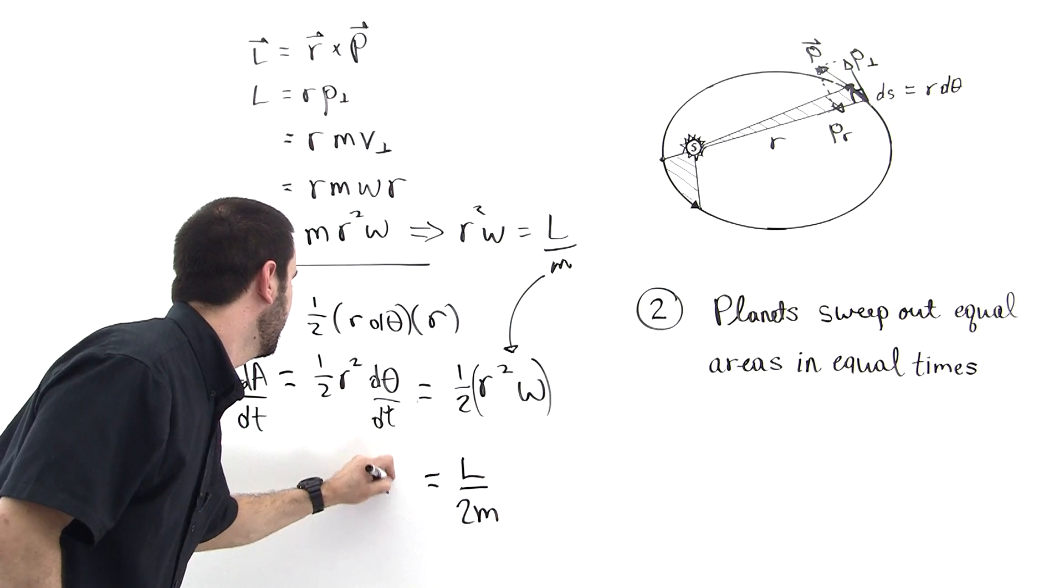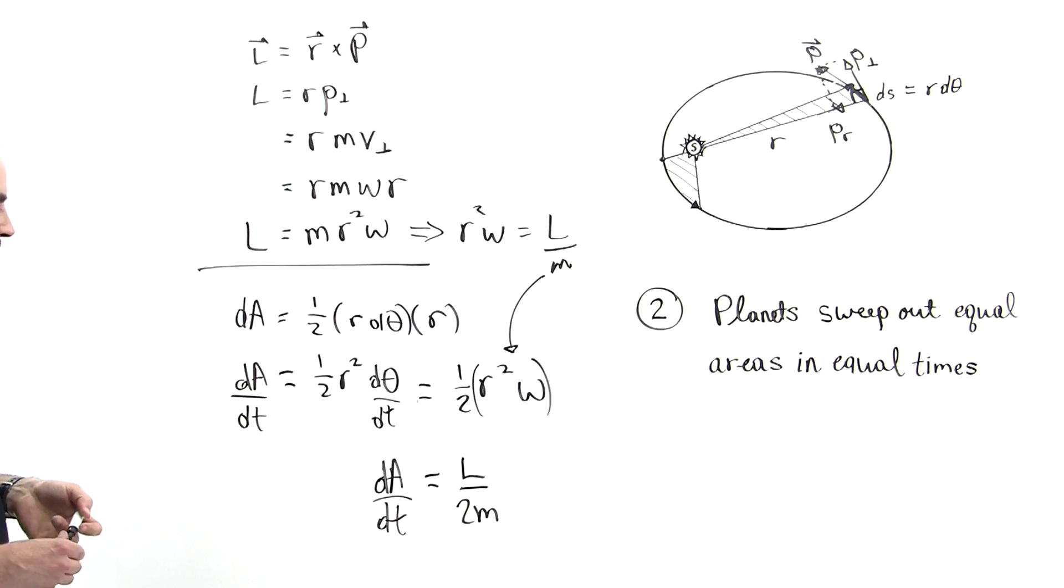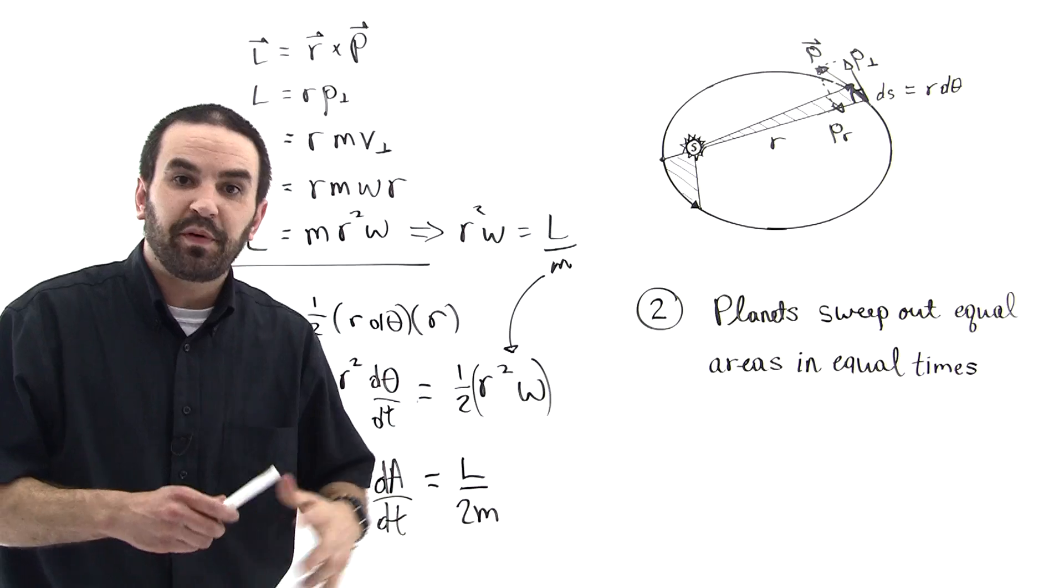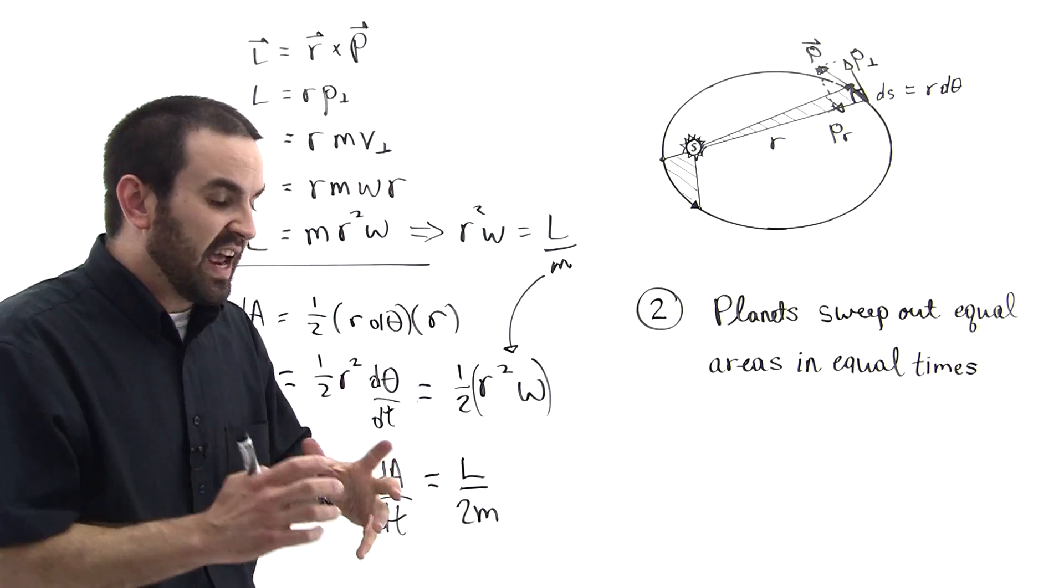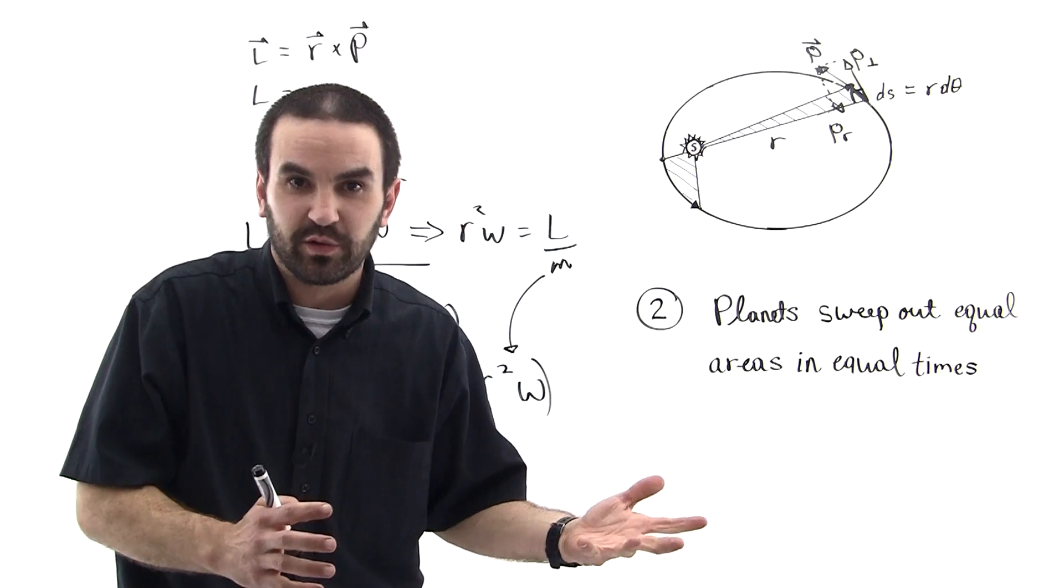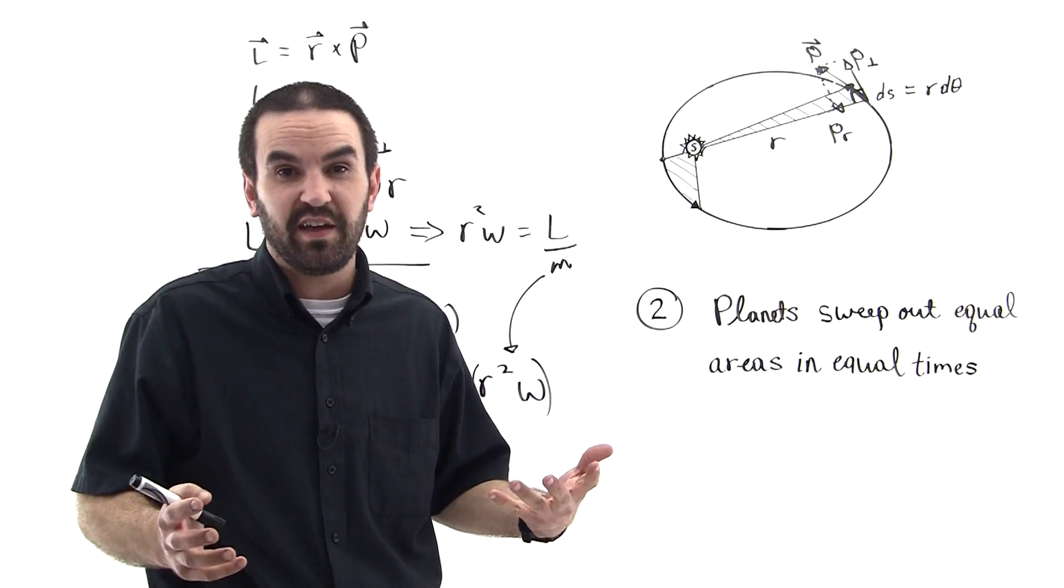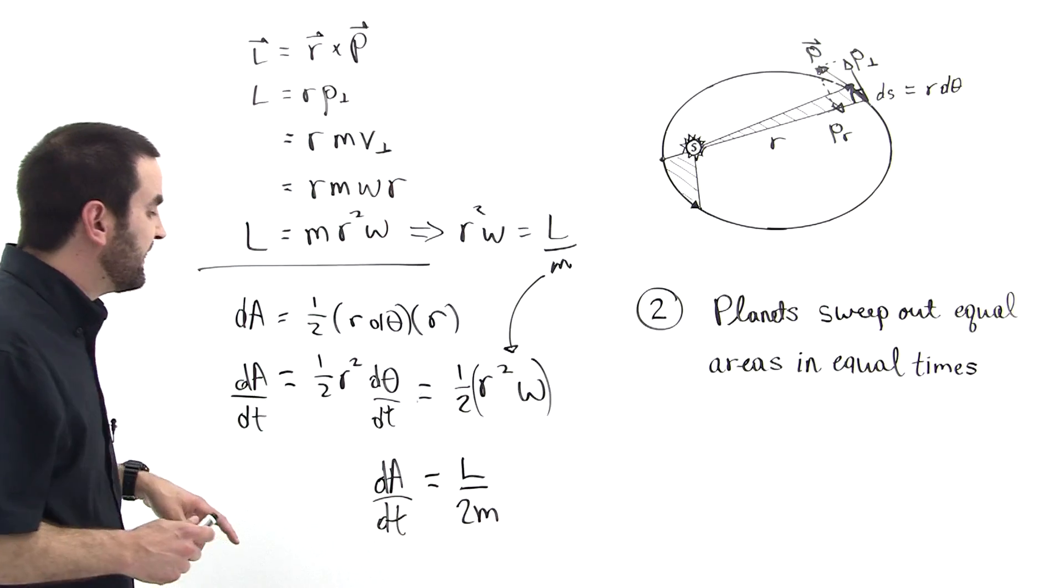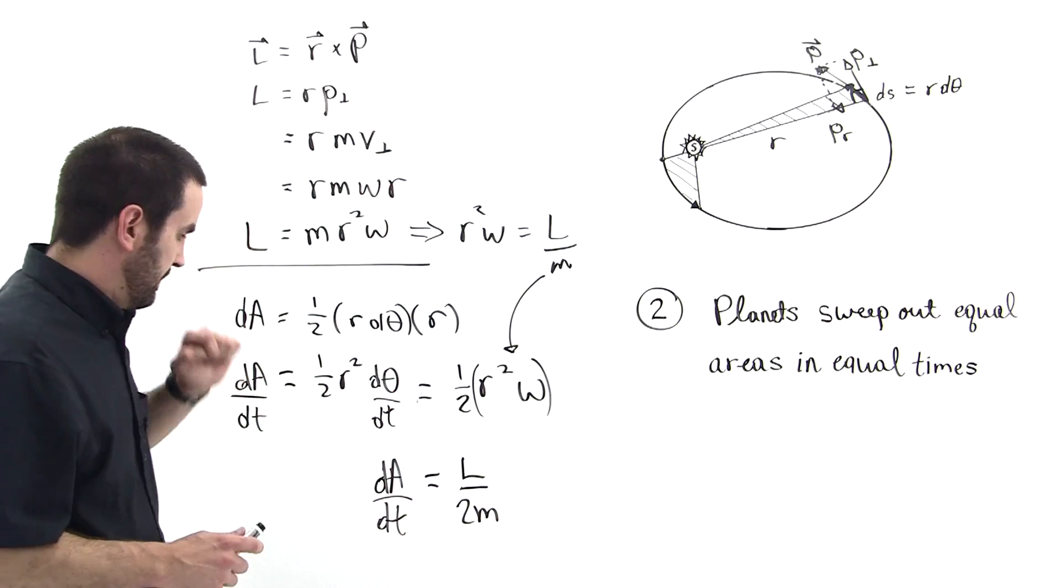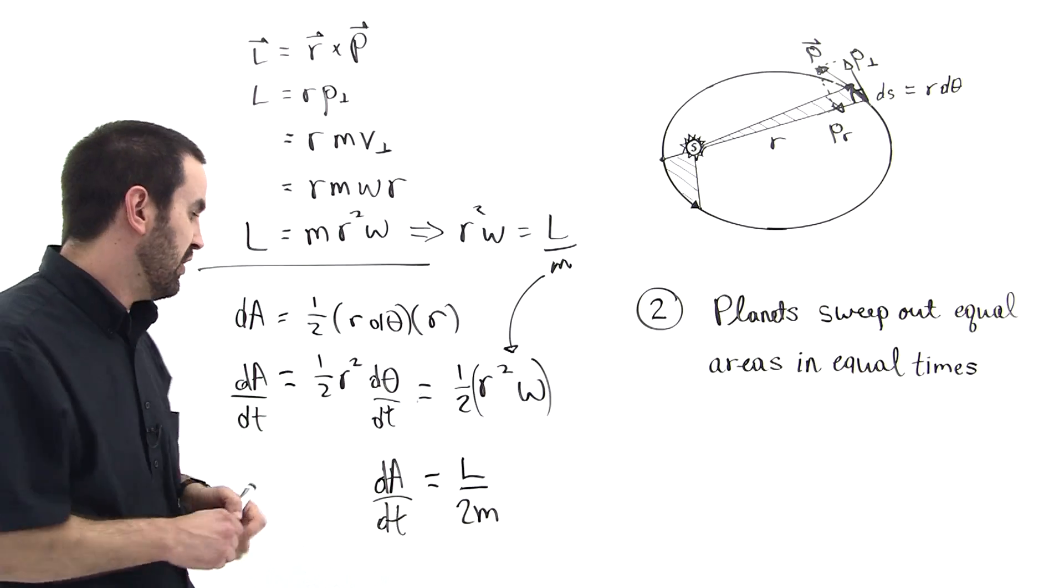And so this is equal to dA dt. But Kepler stated previously that the time rate of change for the areas that planets sweep out equal areas in equal times, that the time rate of change of the areas swept out is equal to a constant value. So, he concluded that the angular momentum for a planet, L, must be equal to a constant value also.